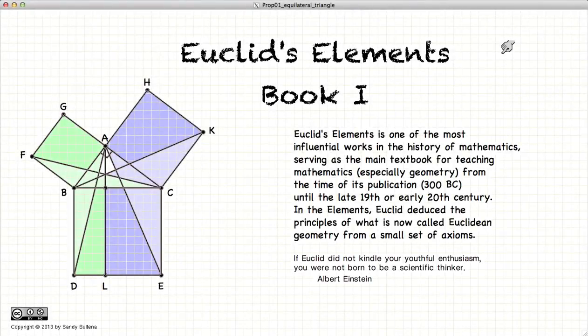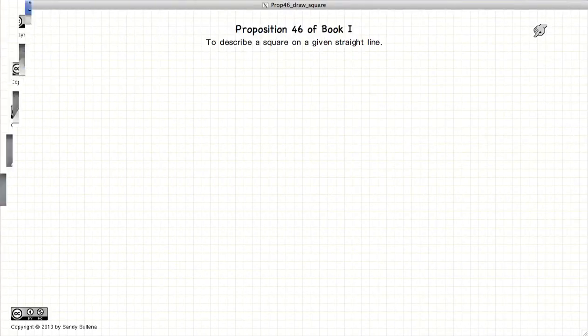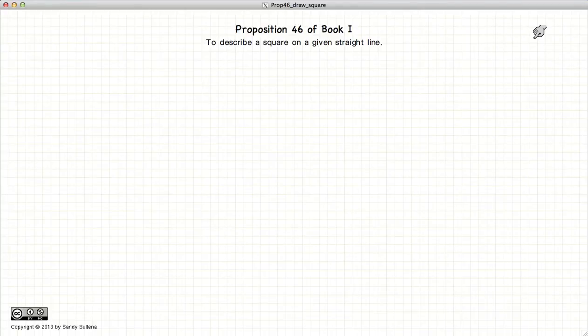Hi, and welcome to my tutorials on Euclid's Elements Book 1. This video presentation is going to be on Proposition 46 of Book 1, which gives us the methods to construct a square given a particular line segment.